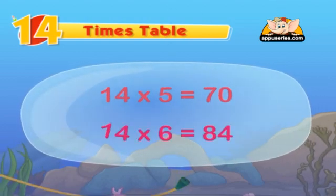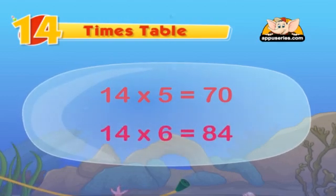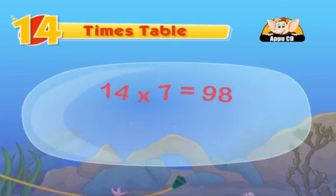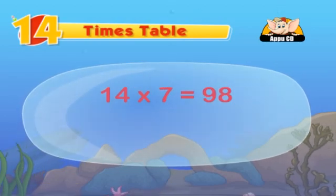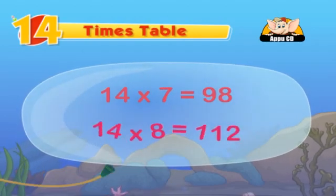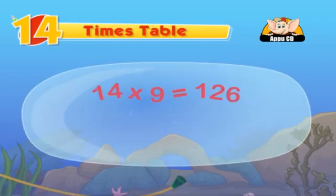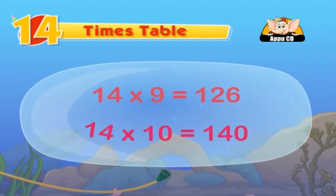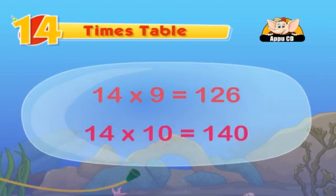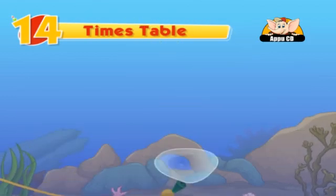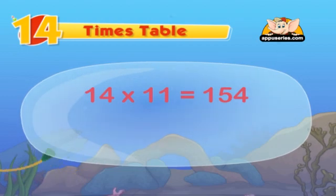14 sixes are 84, 14 sevens are 98, 14 eights are 112, 14 nines are 126, 14 tens are 140. Isn't it so easy? 14 elevens are 154.